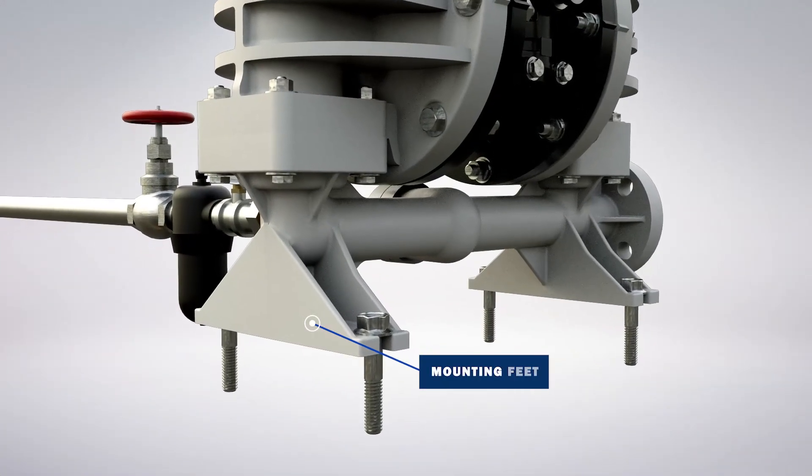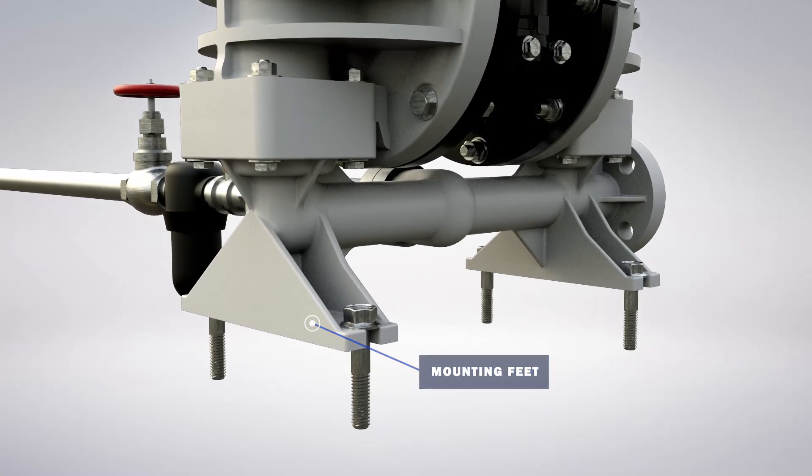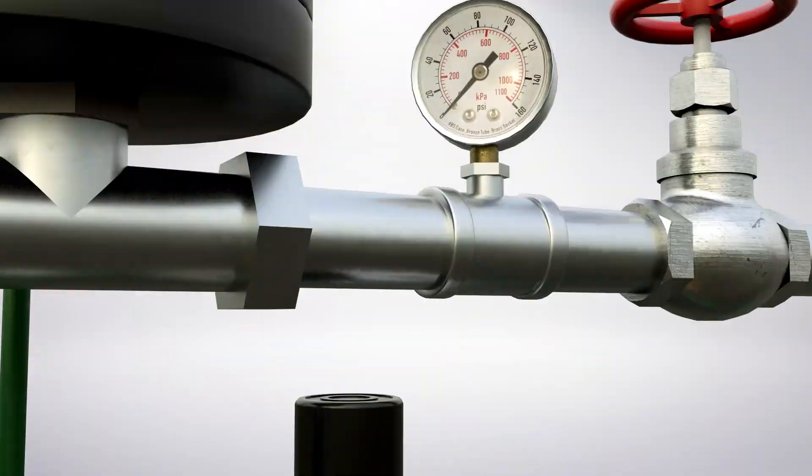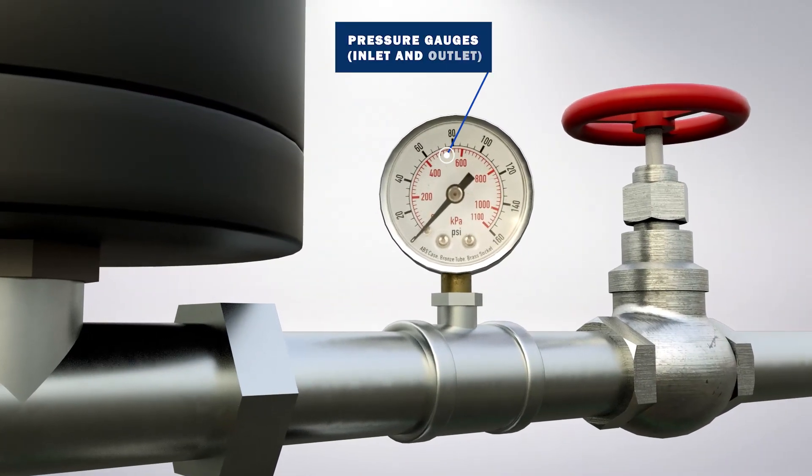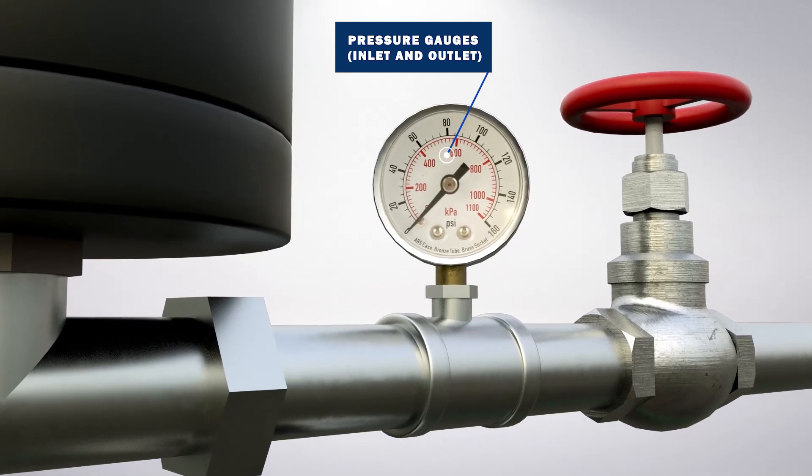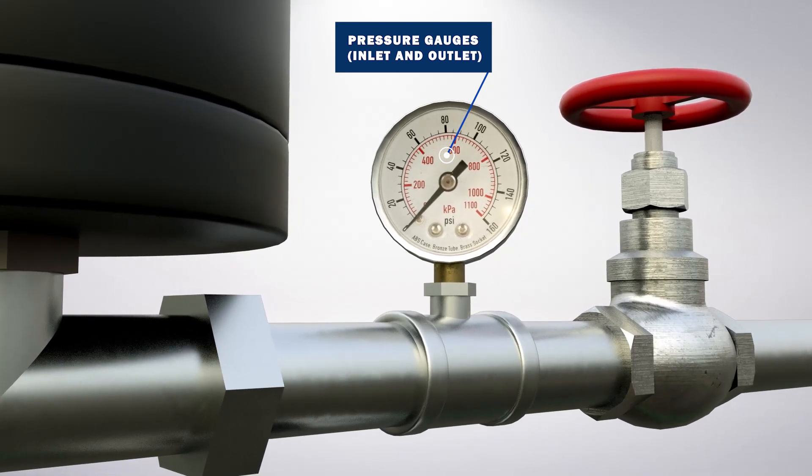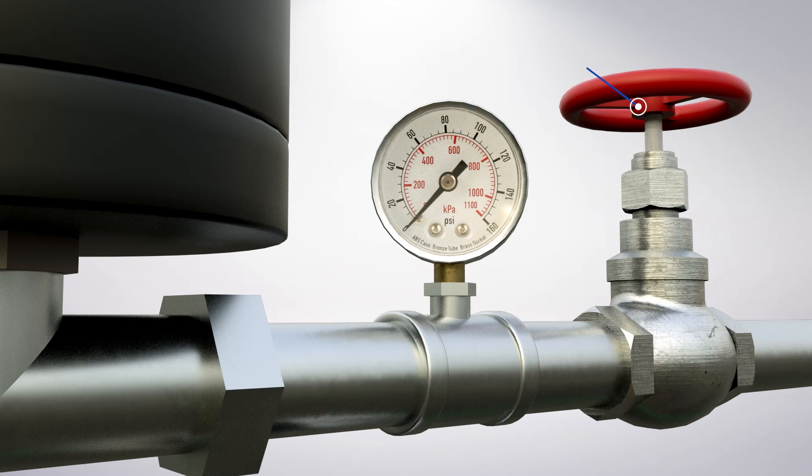The mounting feet can also be used to minimize vibration. Pressure gauges are recommended on both the inlet or suction side of the pump and the discharge side of the pump to confirm pressure. Pressure gauges can assist with any required troubleshooting and can be used to monitor the pump's performance. An isolation valve is recommended to further protect the pressure gauge.